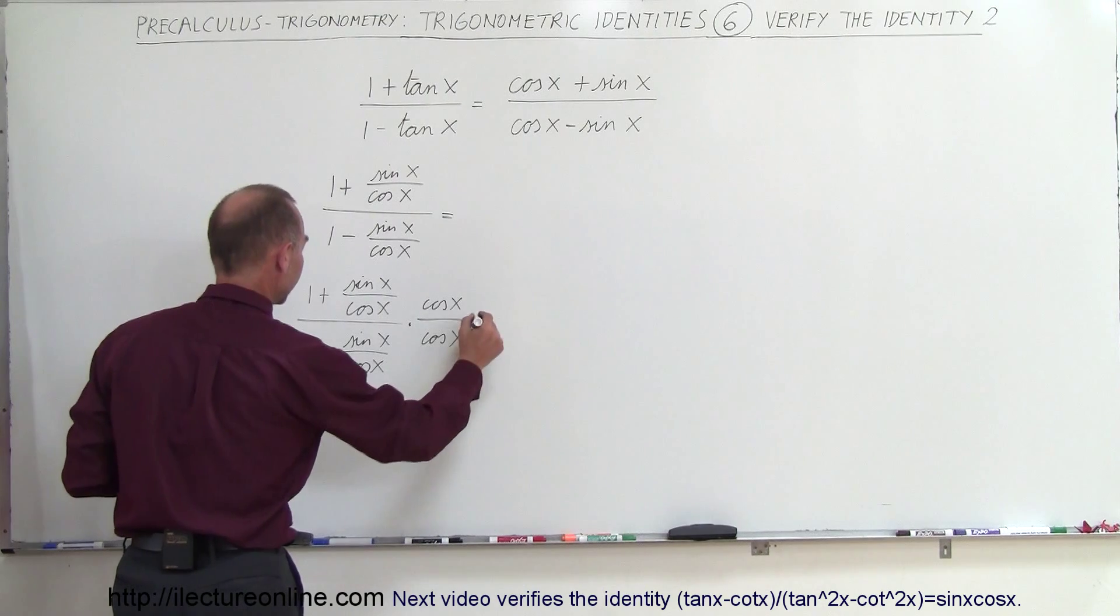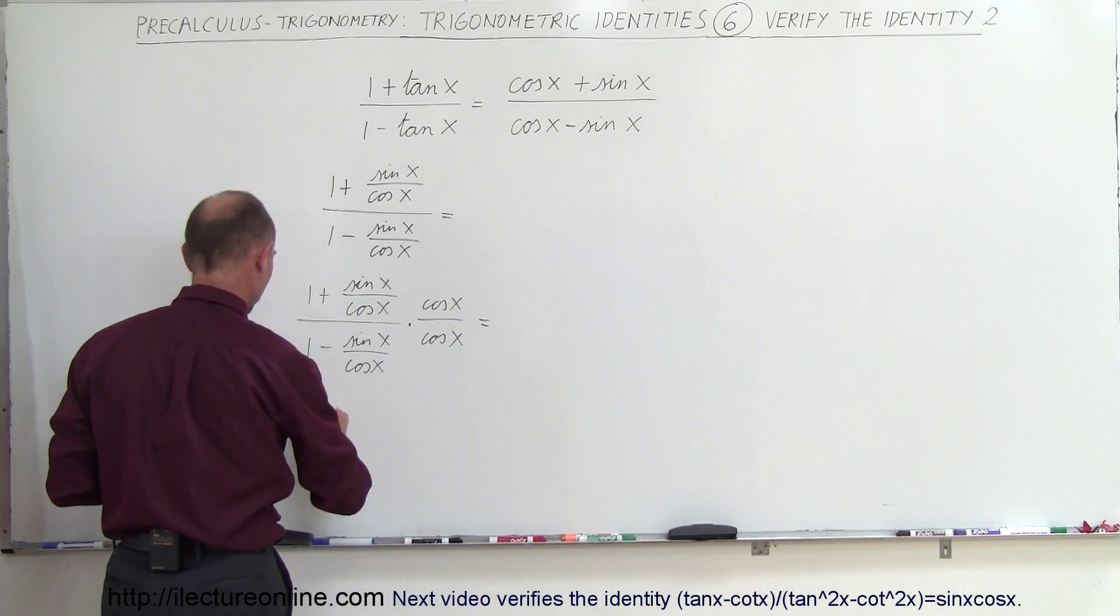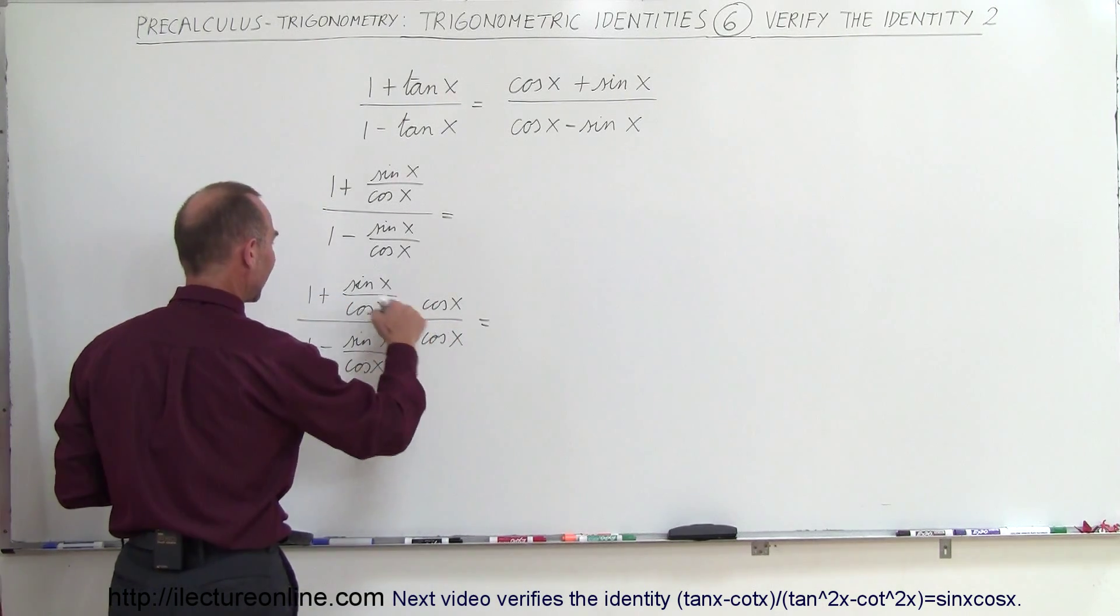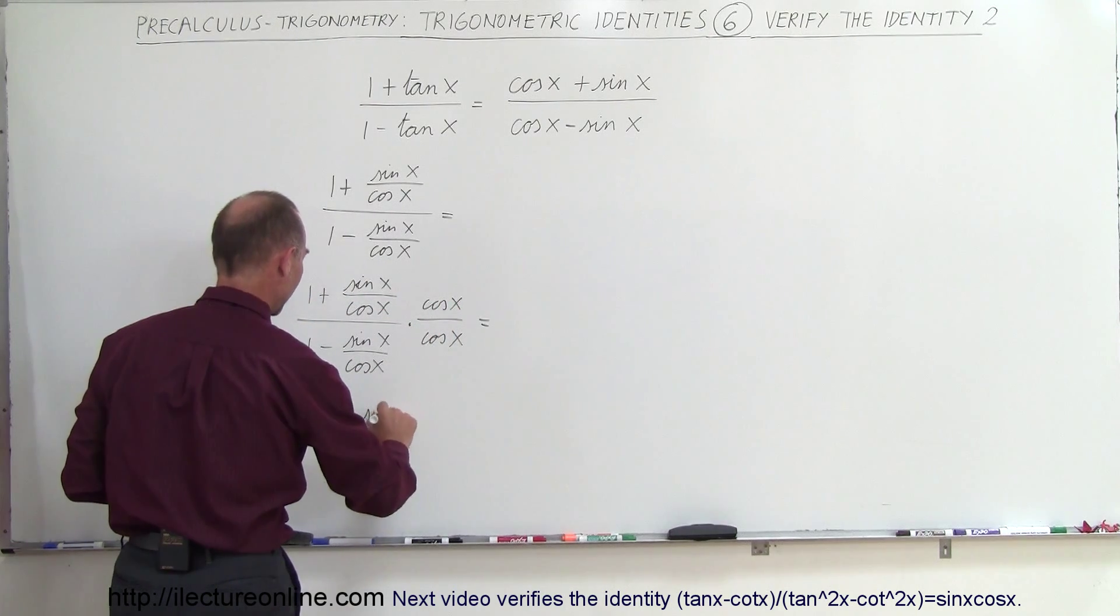So when we do that, we get the following. This times this gives me the cosine of x. This times this, the cosines cancel out, so that's plus the sine of x.